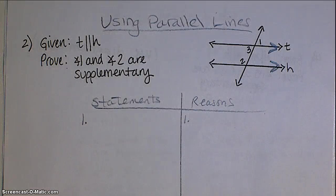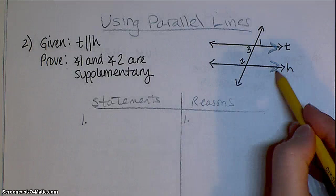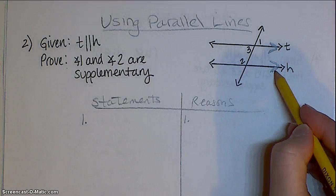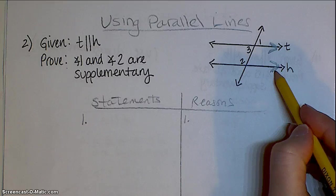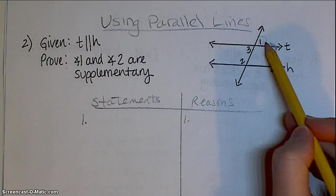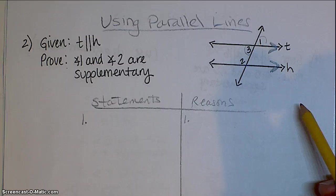And then I'm going to start seeing is there anything else that I know, and is there anything else that I can figure out based on the fact that these are parallel lines. So right away something jumps out to me, I can see vertical angles right here, angles 1 and angle 3.